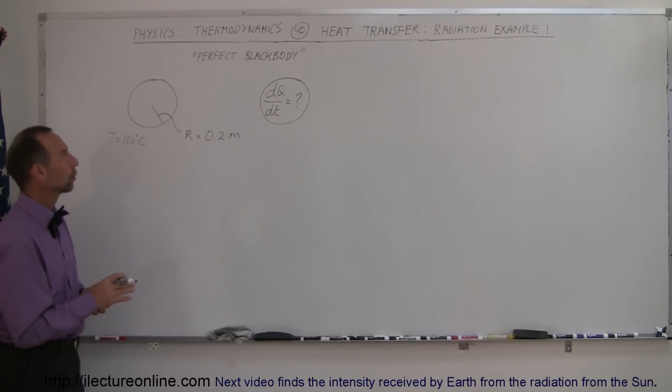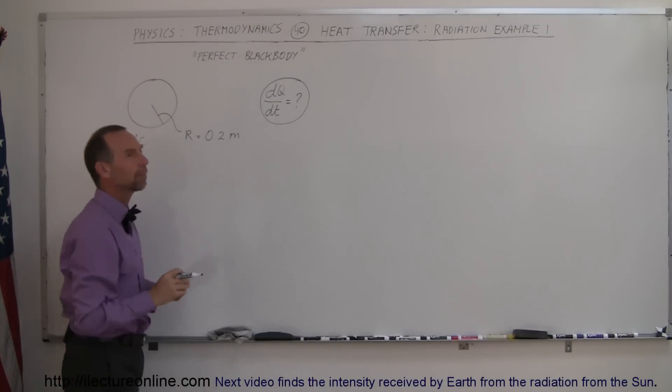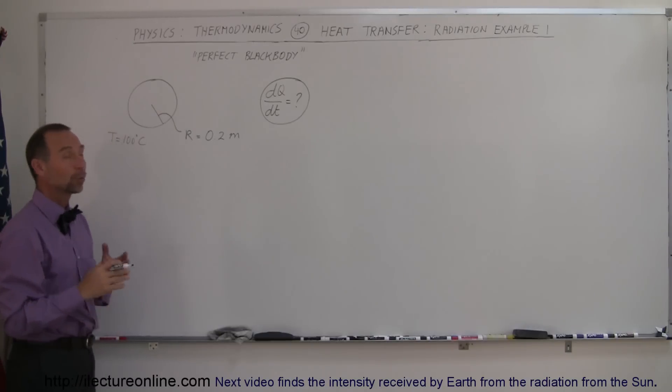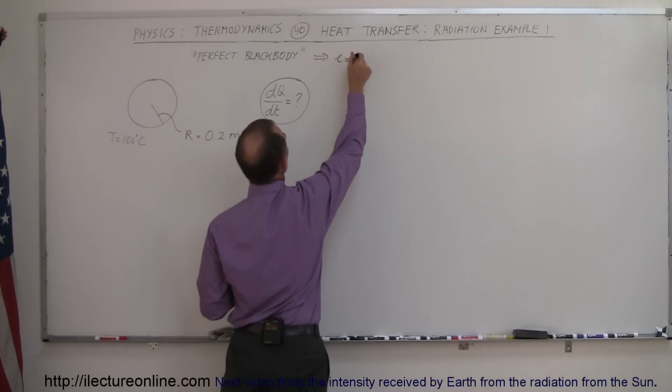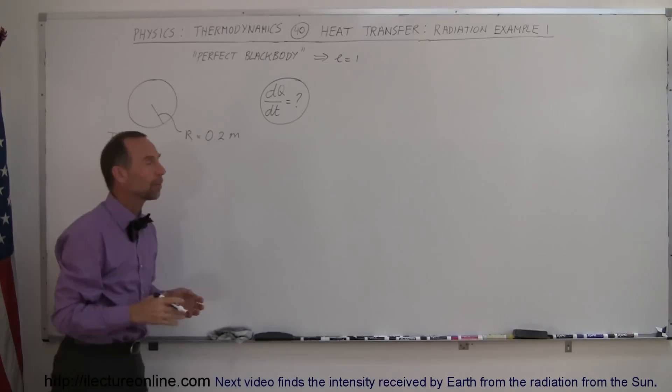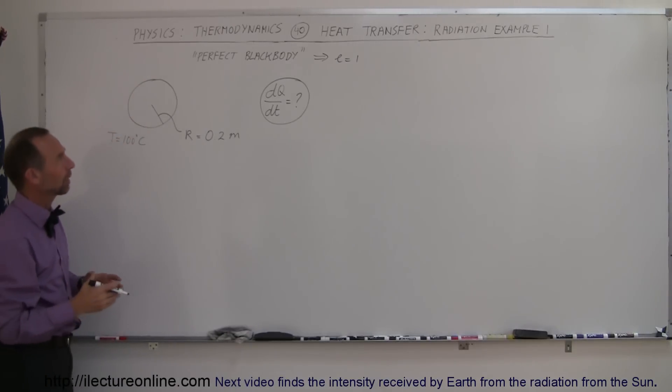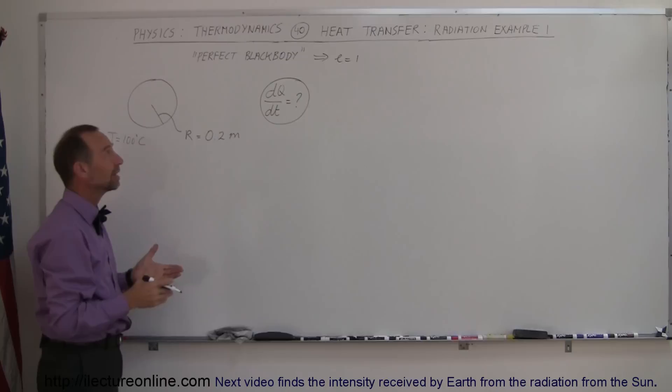Notice that we are going to call this object a perfect black body or a perfect radiator, which means that the emissivity is equal to 1. That's all that means. So when you see an example or a problem like that and they say it's a perfect black body or it's a black body radiator, then we can assume that the emissivity is equal to 1.